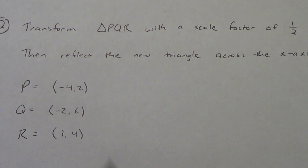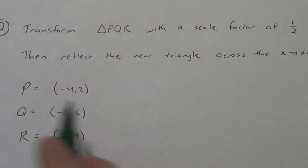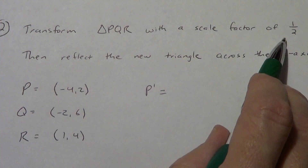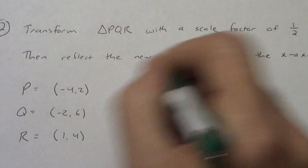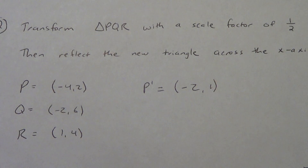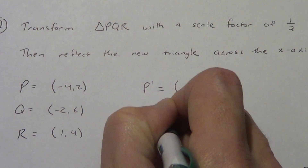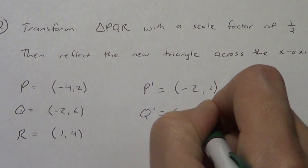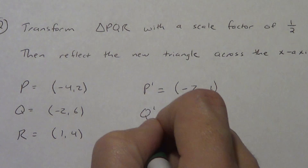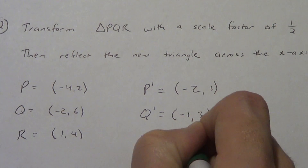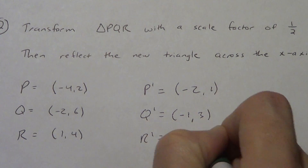So let's do the multiplying. I'm going to call the new point from P: P prime. Negative four times one half — negative times positive is negative, four times one half is two. Two times one half is one. So P prime should be at negative two, one. Q prime: negative two times positive one half is negative one, and six times one half is three. And R prime: one times one half is one half, four times one half is two.